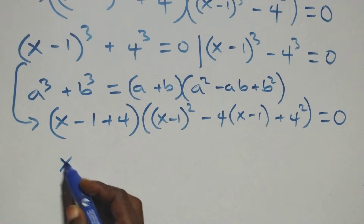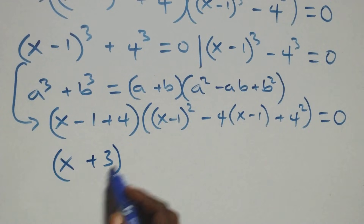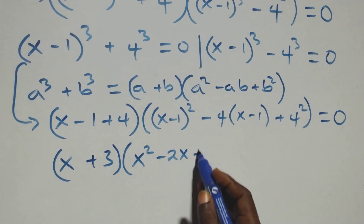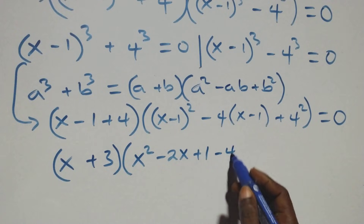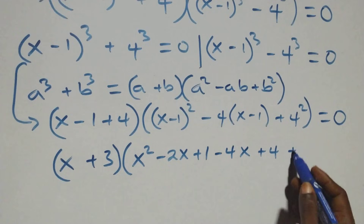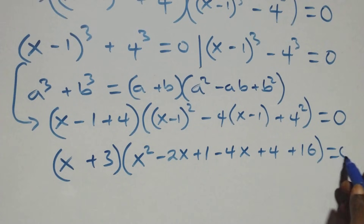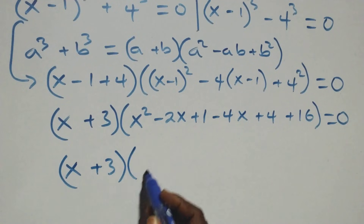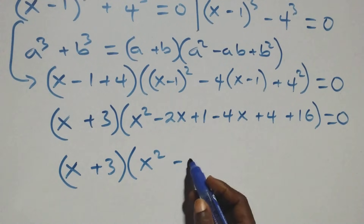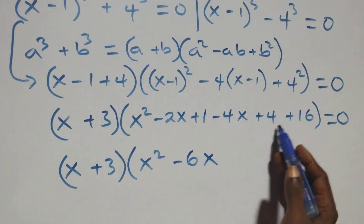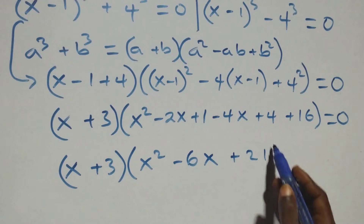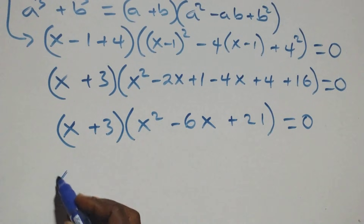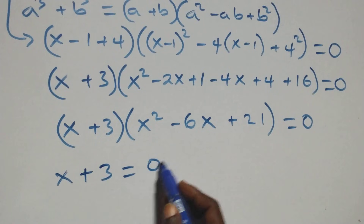Expanding: this gives us (x plus 3) times [x squared minus 2x plus 1, then minus 4x plus 4, plus 16] equals 0. Simplifying inside the bracket: x squared minus 6x plus 21. So we have (x plus 3) times (x squared minus 6x plus 21) equals 0.